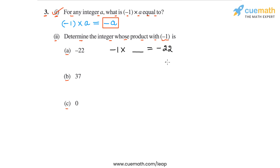So what will that integer be? Well, like we saw in part 1, (-1) × a = -a. Therefore, if we put 22 here, this statement will become correct because (-1) × 22 = -22. Similarly, in part b we have 37.